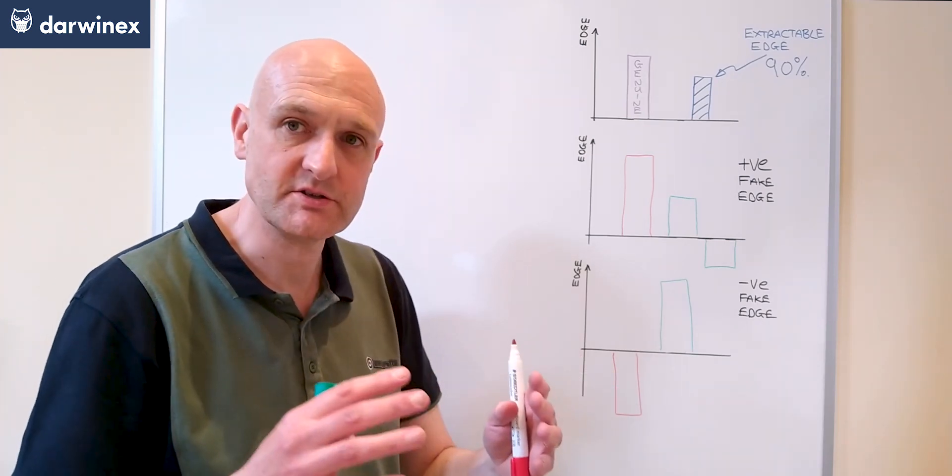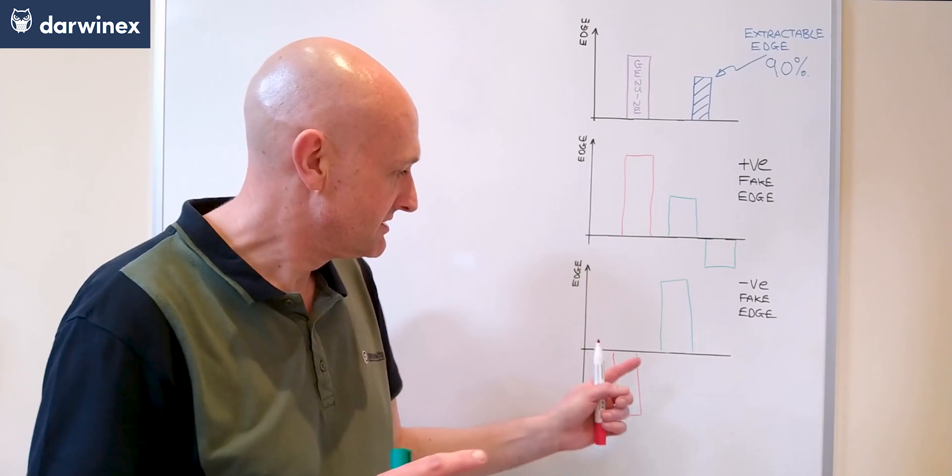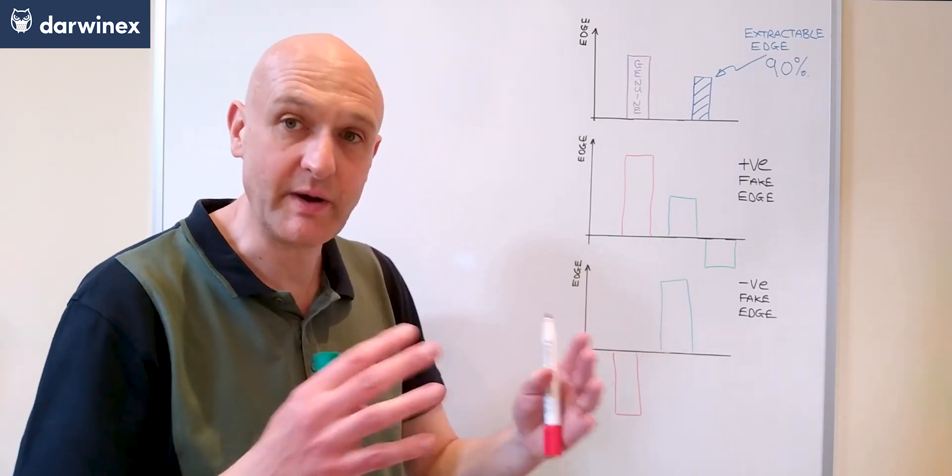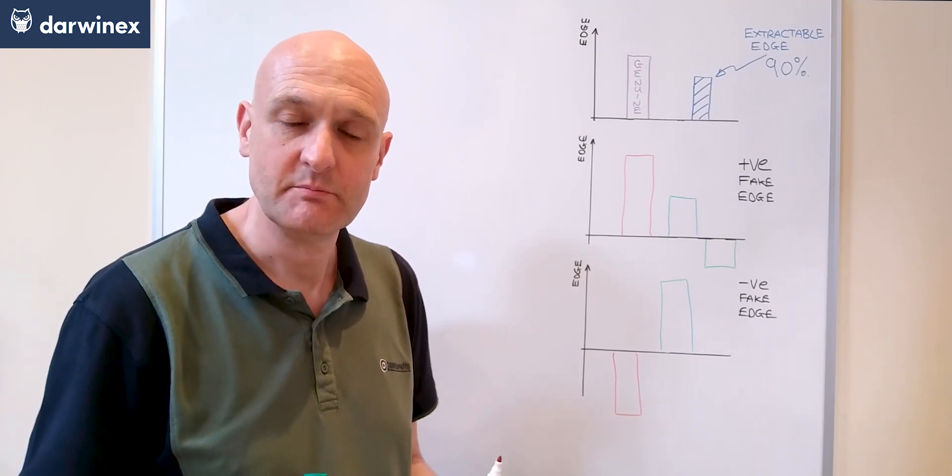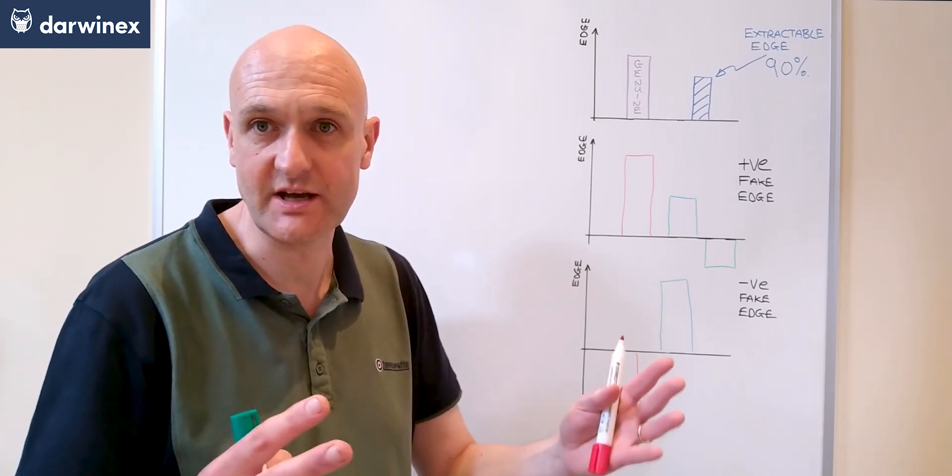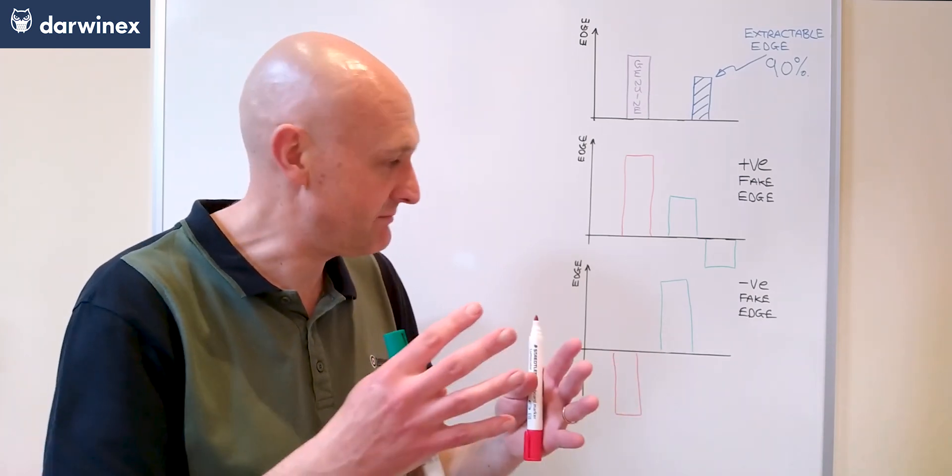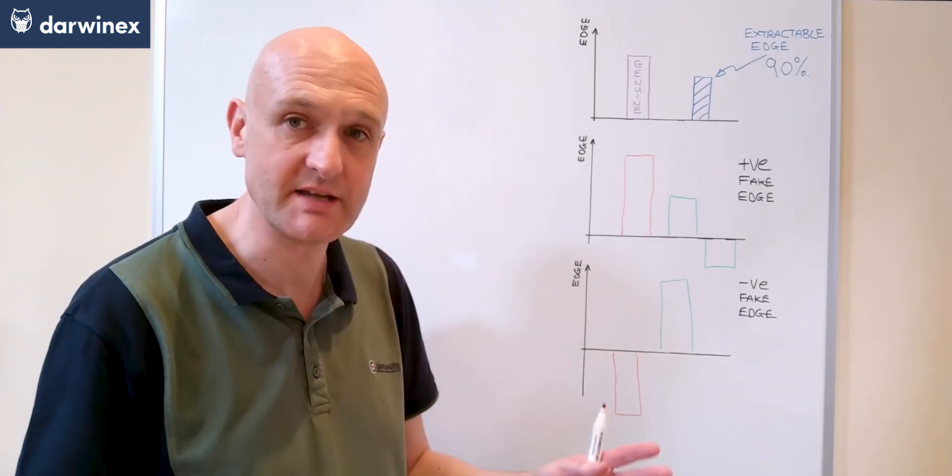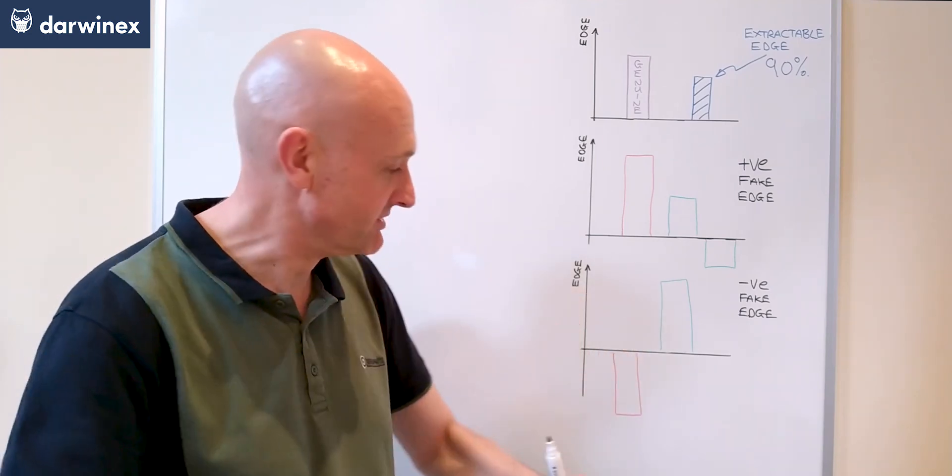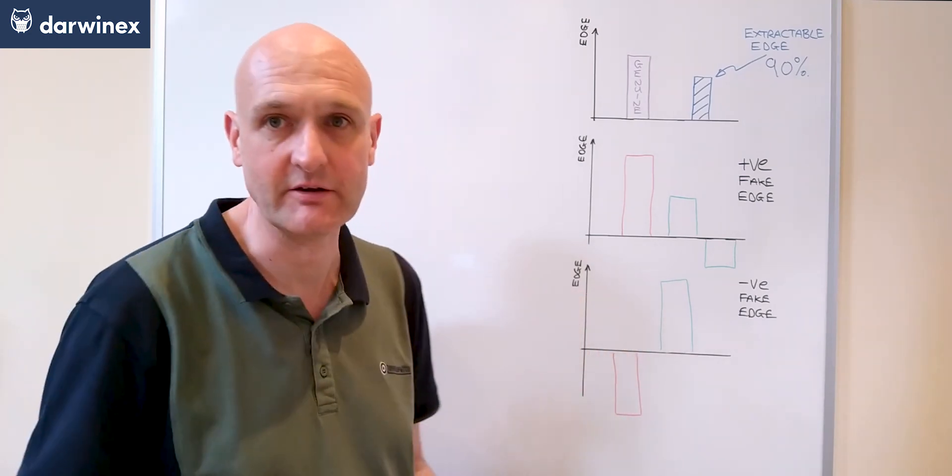Now that might have been because of the fact that these parameters by chance got negatively affected by news events such as NFP coming out, and that might have happened on a few occasions in the parameter optimization which meant that the result was it got ranked very lowly.